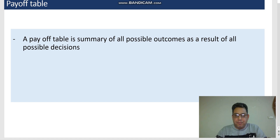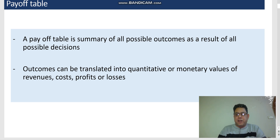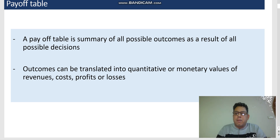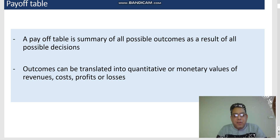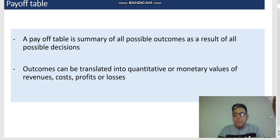The outcome is not controllable — in most cases it's not in the hands of the decision-makers. Outcomes can be translated into quantitative or, in most cases, monetary values of revenues, costs, income, expenditures, profits or losses. Businesses and decision-makers are more comfortable translating all quantitative aspects into monetary figures, because knowing whether they will generate sufficient returns or incur less costs helps them reach a decision.